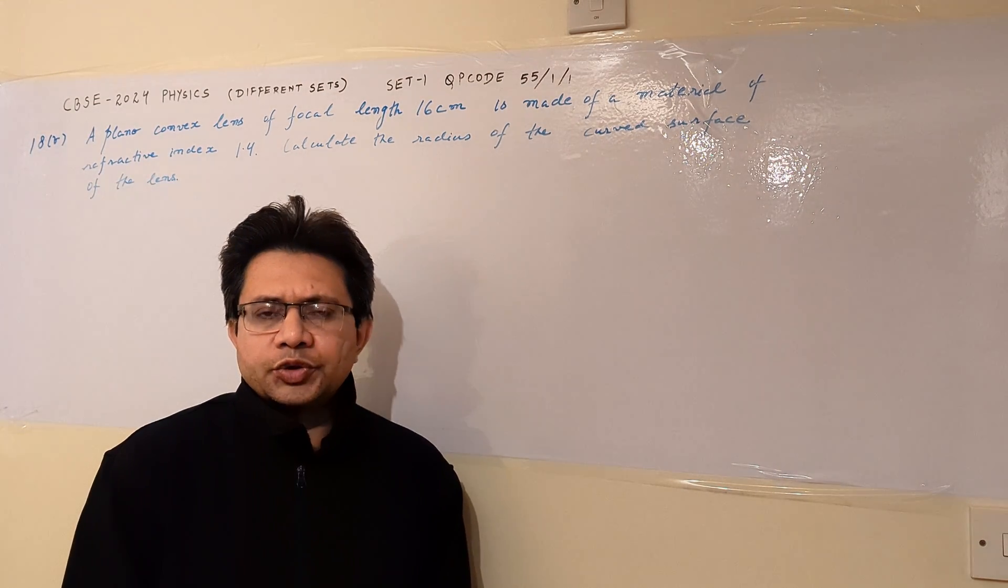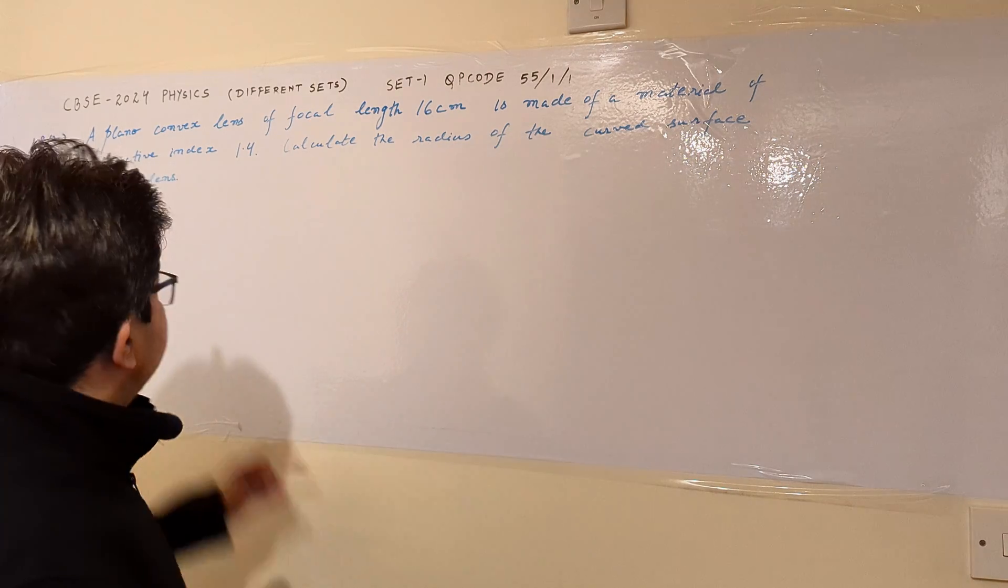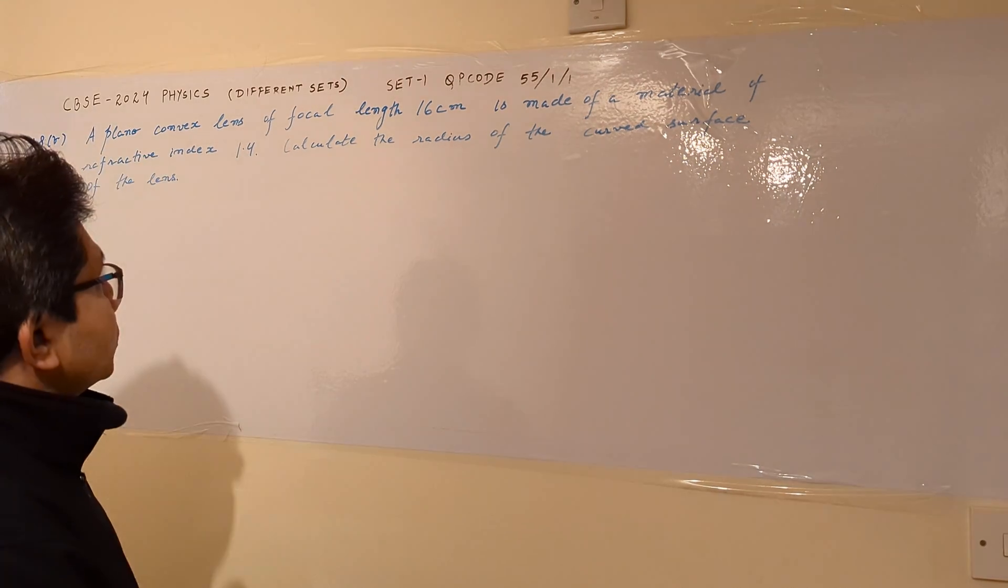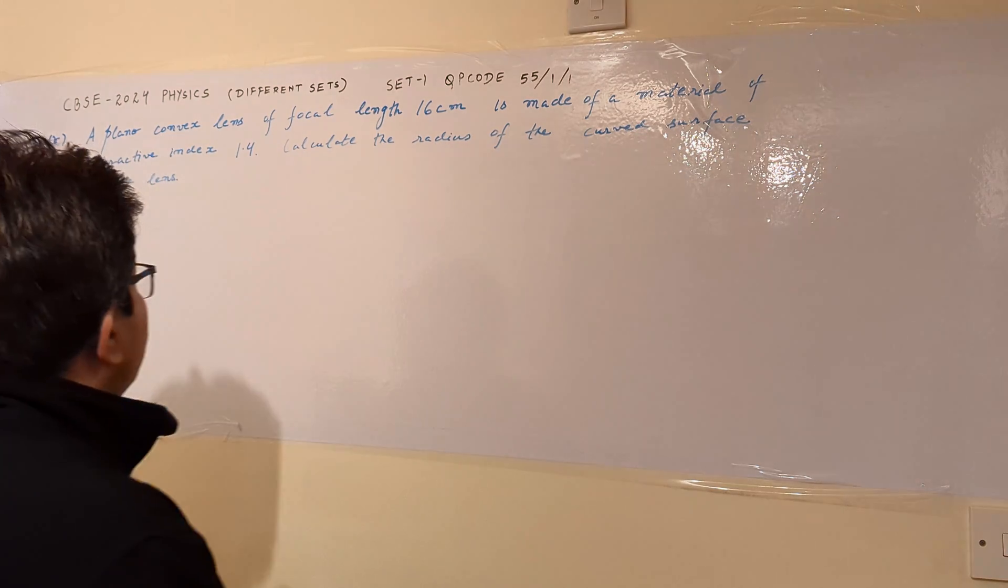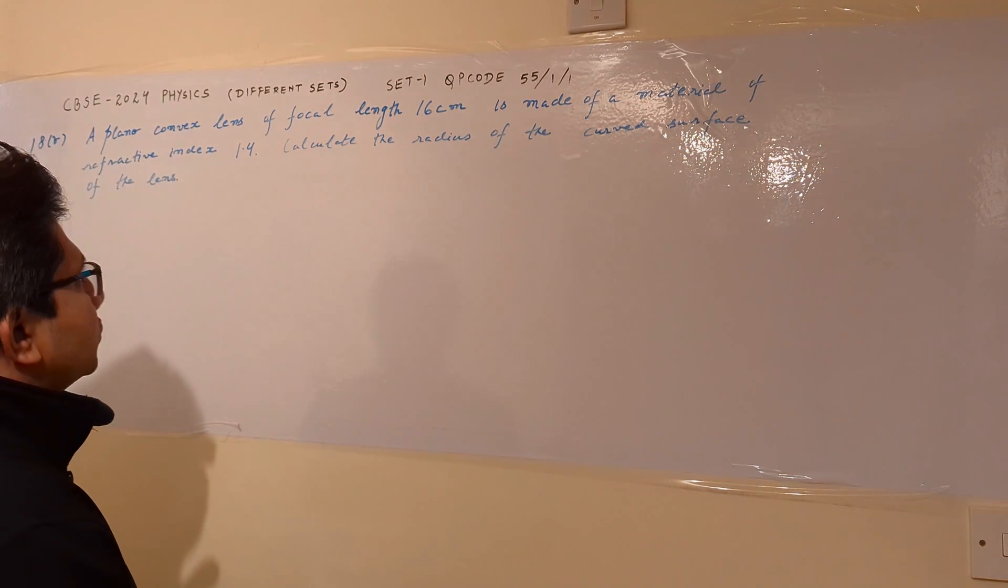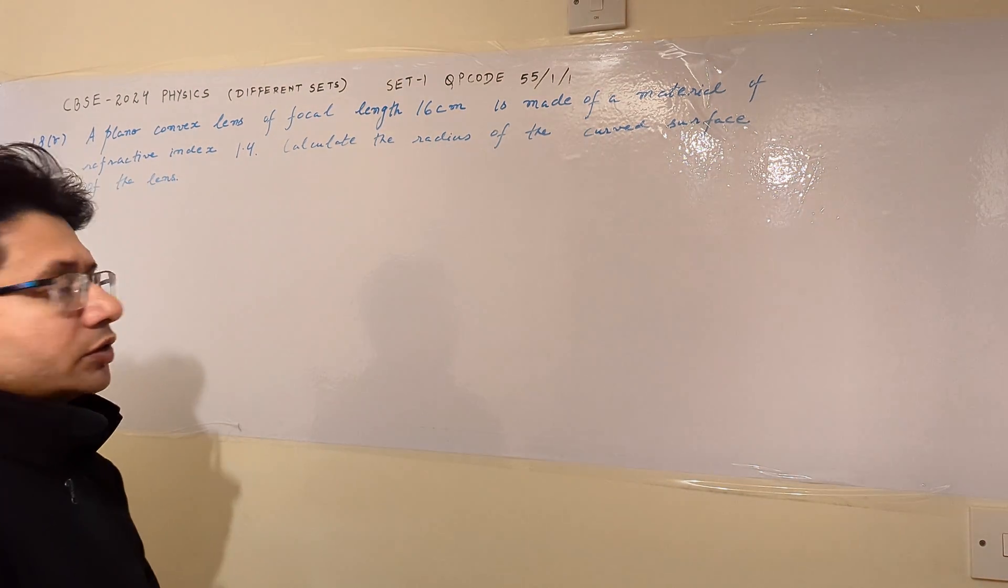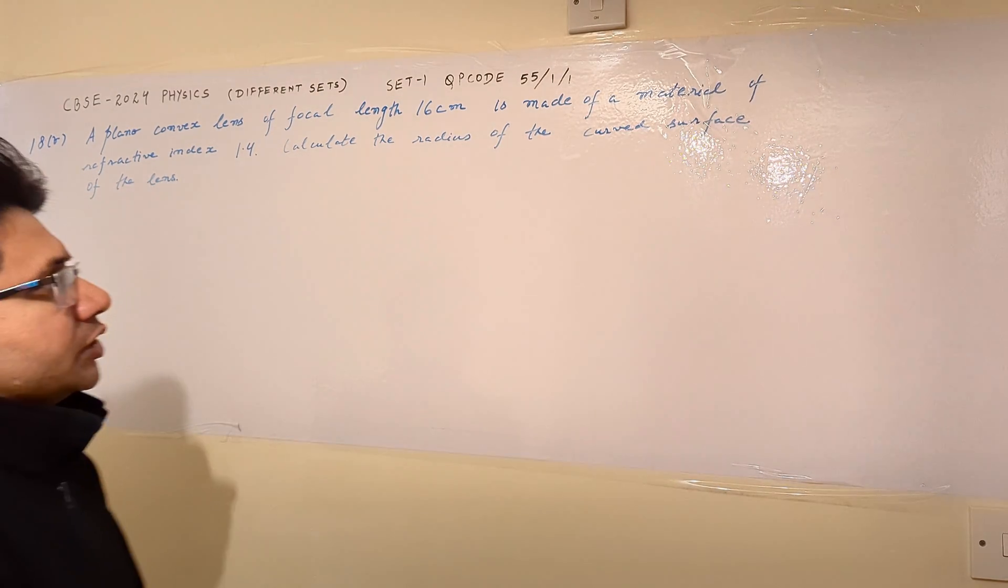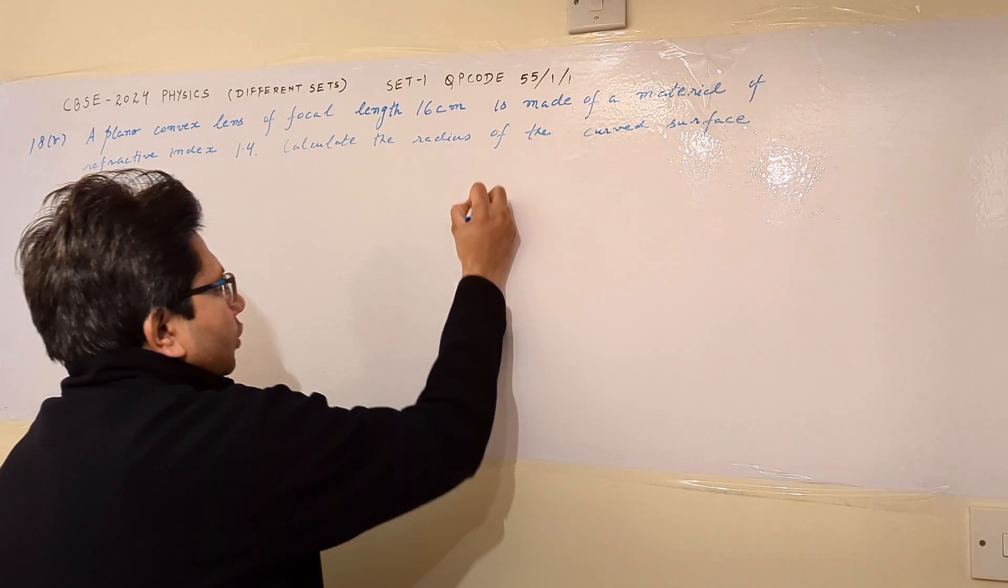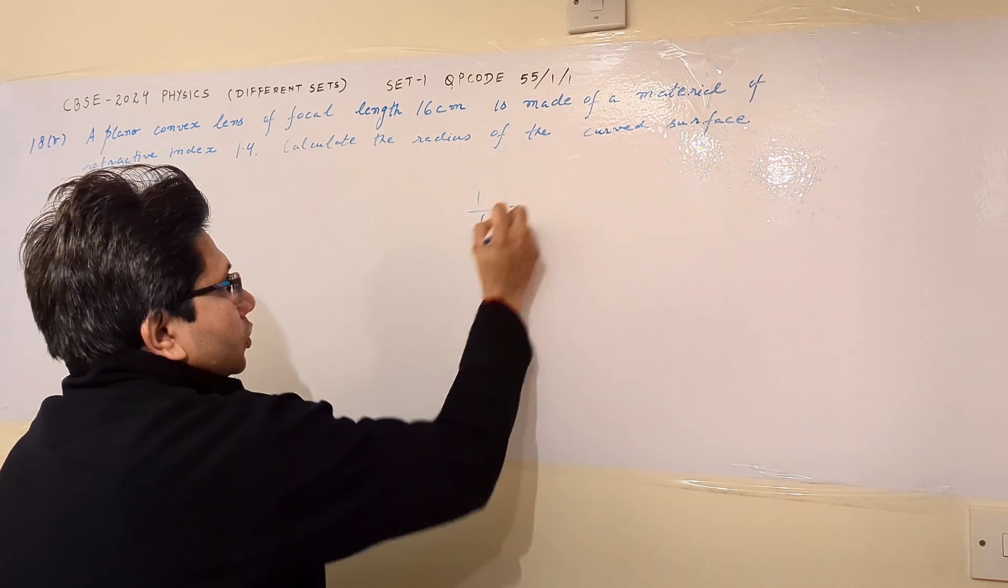Hello students, hope you are doing well. The question is: a plano-convex lens of focal length 16 centimeters is made of a material of refractive index 1.4. Calculate the radius of the curved surface of the lens. This problem is based on the formula for lenses.